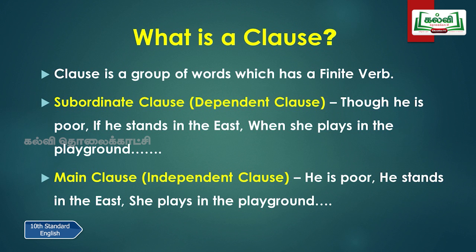Then what is a clause? A clause is a group of words which has a finite verb. Here we have a group of words same as in a phrase, but it combines with a finite verb. A clause will show the tense — whether it is present, past, or future — but we cannot identify the tense from a phrase. A clause will show you the tense.